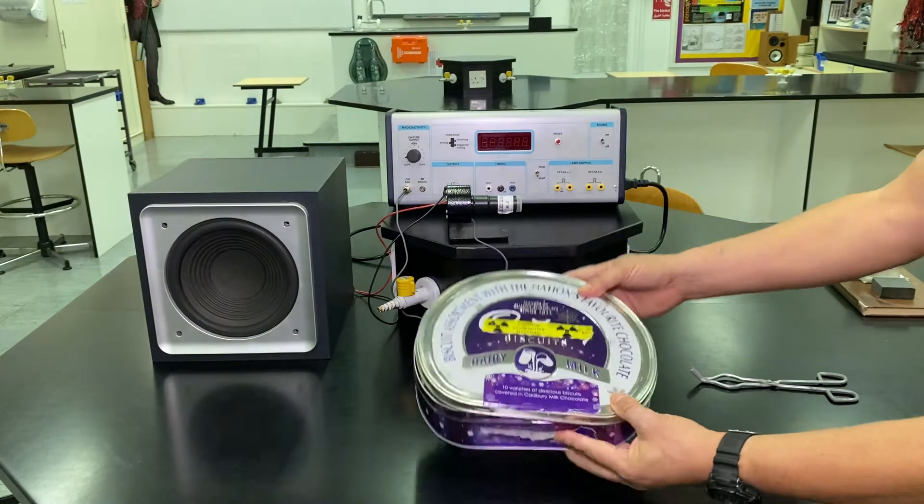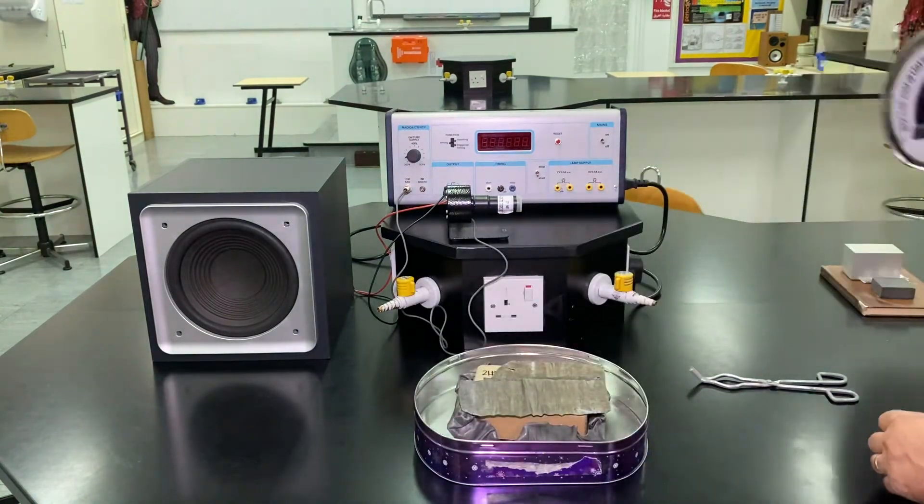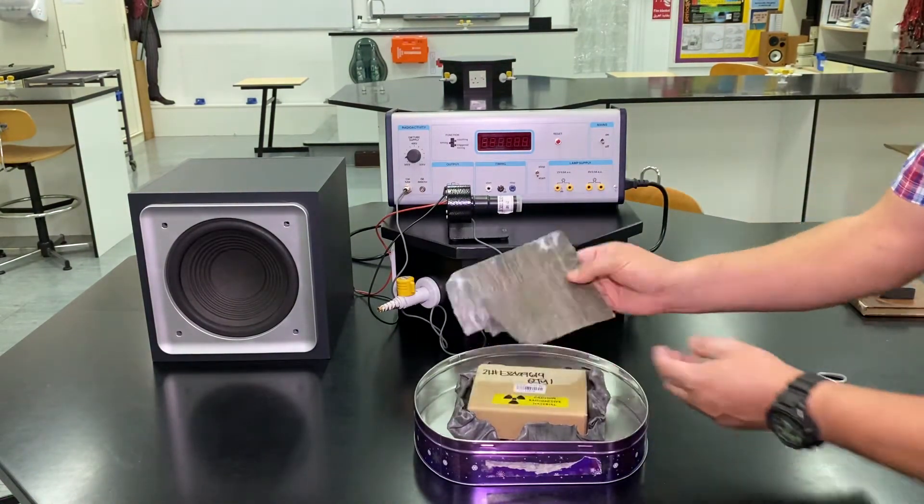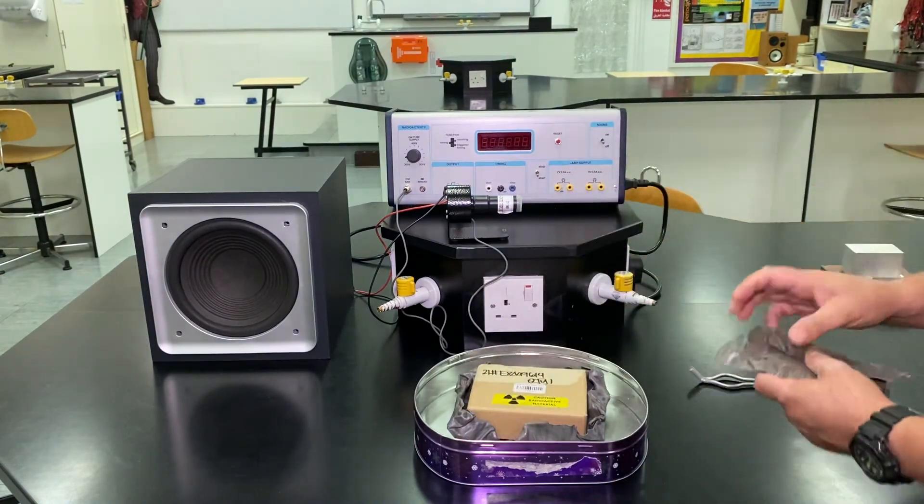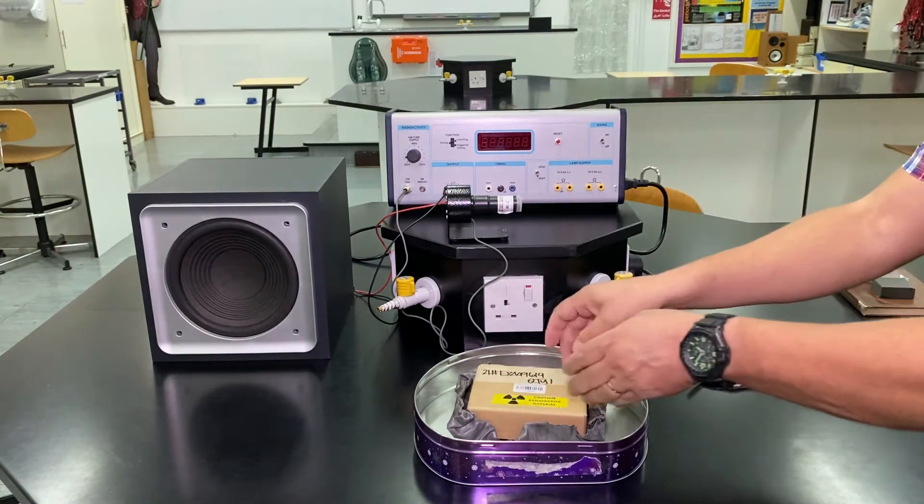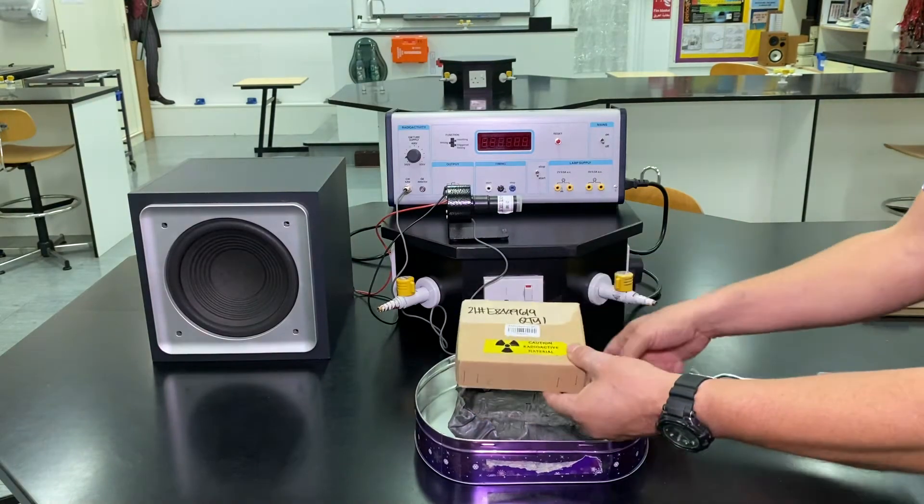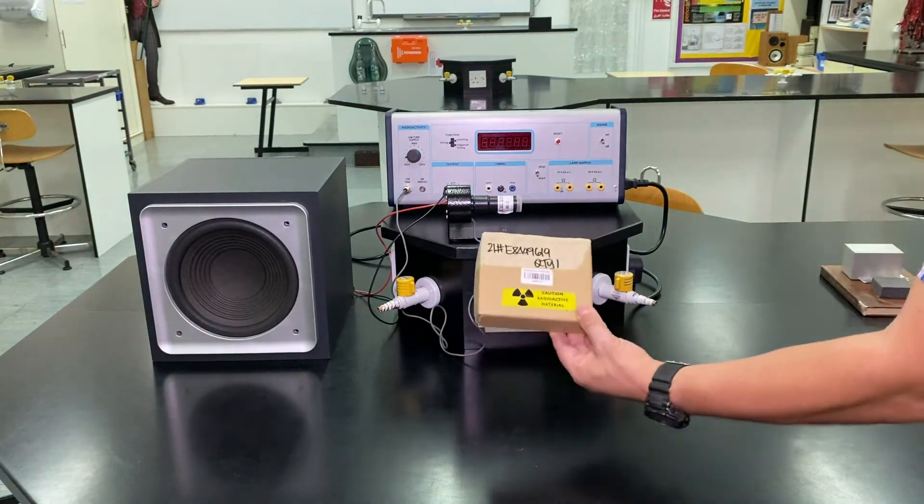We keep them in a lead lined box for safety, because obviously lead is very good at absorbing all three types of radiation: alpha, beta and gamma. So that keeps them quite nice and safely stored.